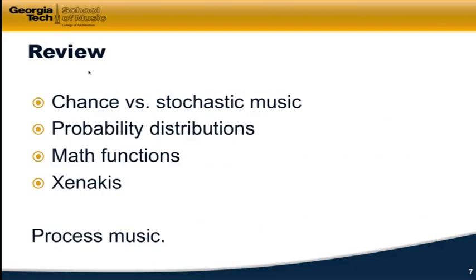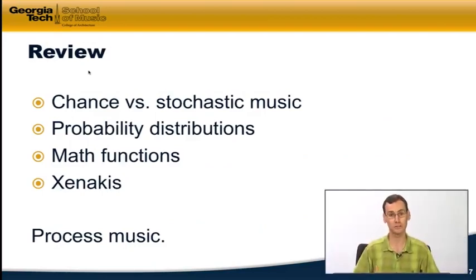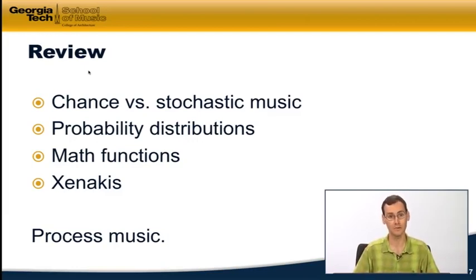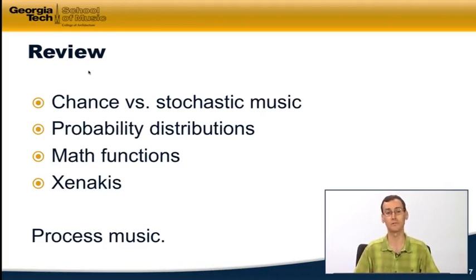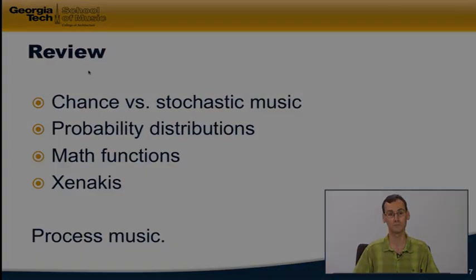To review: we talked about the differences between chance and stochastic music in terms of distributions and mappings. We looked at Gaussian distributions as a way to structure chance decisions into a more stochastic approach, used the floor function to quantize random numbers to the metrical grid, and examined the music of Iannis Xenakis as a historical example of stochastic composition. In the next video, we're going to look at a very different approach to algorithmic composition: process music.